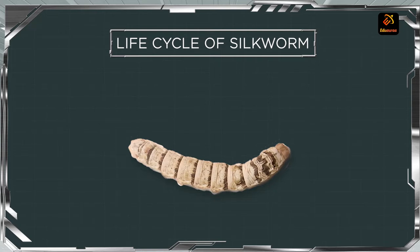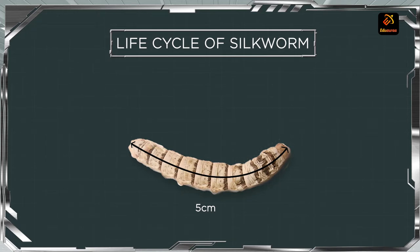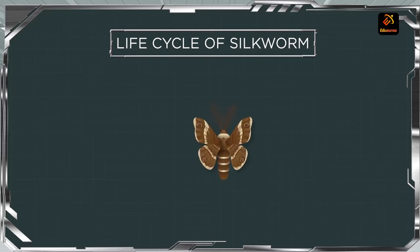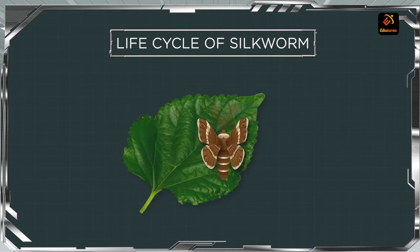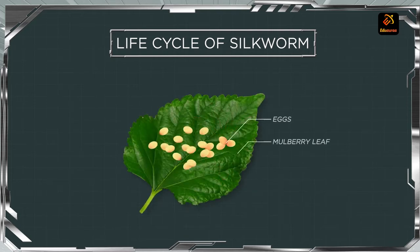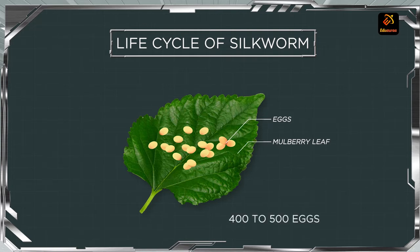Basically, any adult silkworm is around 5 cm in length. It is a 5 cm long insect, and most importantly the female insect is the one that is going to lay eggs — but where? On the mulberry leaves only, because they are reared only and only on the mulberry leaves. The female insect lays around 400 to 500 eggs.